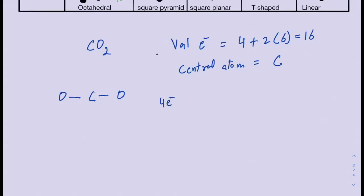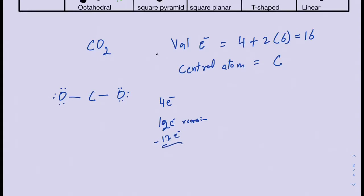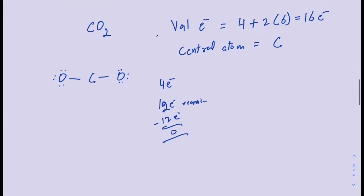Place one bond between the carbon and each oxygen, which uses four electrons, leaving twelve electrons remaining. The next step is to fulfill the octets of the surrounding atoms. Each oxygen currently has only two electrons, so put six more on each oxygen — that uses up the remaining twelve electrons, and all sixteen valence electrons have been used.